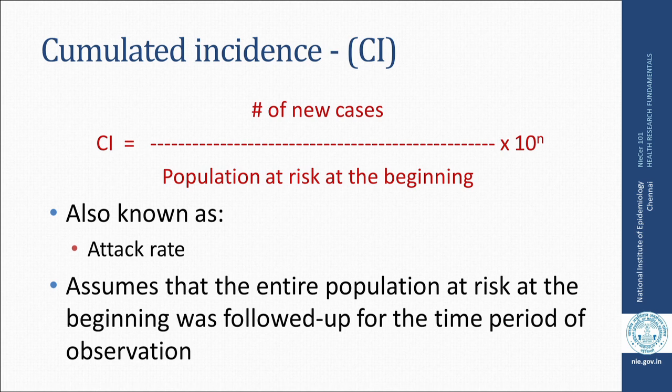Cumulative incidence (CI) is the number of new cases divided by the population at risk at the beginning, multiplied by a factor of 10. This is known as the attack rate and it assumes that the entire population at risk at the beginning was followed up for the entire time period of observation.